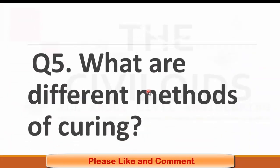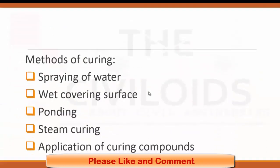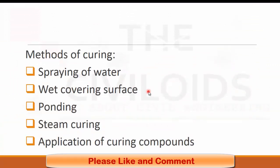Question number five: What are different methods of curing? We have already discussed that what is curing. Curing is the process of maintaining the moisture content of the concrete in a suitable amount. Methods of curing are: spraying of water with covering up surface, ponding which is mostly used for slabs and floors, steam curing which is the fast and effective method of curing, and application of curing compounds like calcium chloride. These compounds kept the surface of the concrete wet.